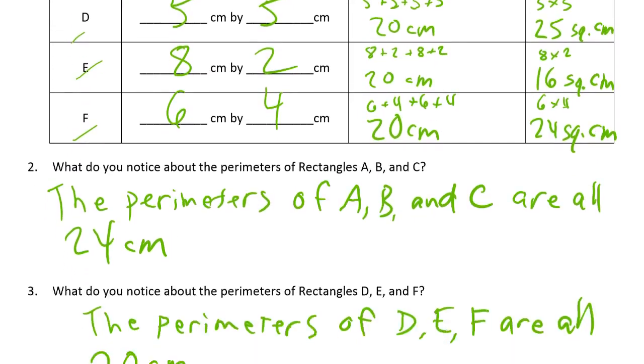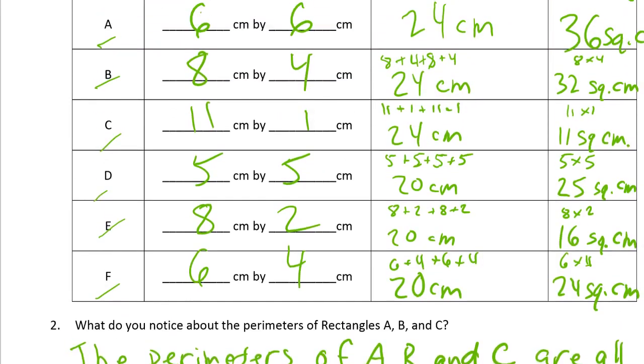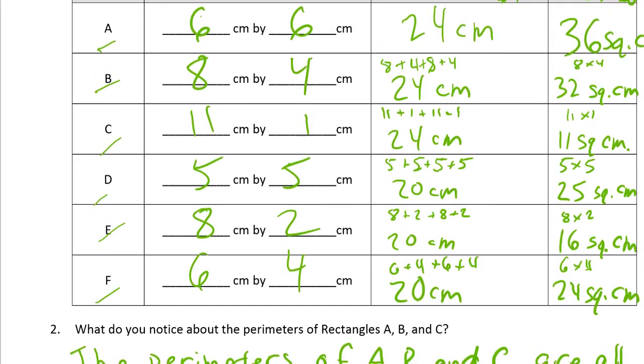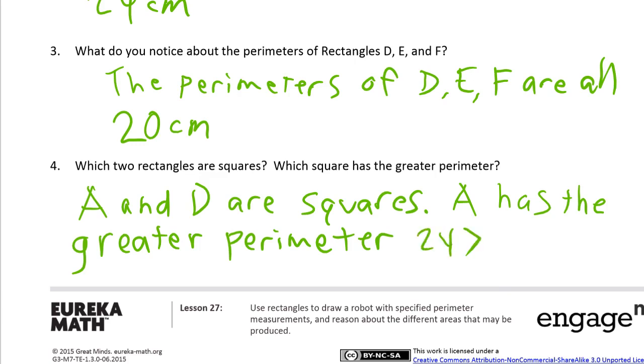And which one has the greater perimeter? A is 24 and D is 20. So A has the greater perimeter. And I'm going to write 24 is greater than 20.